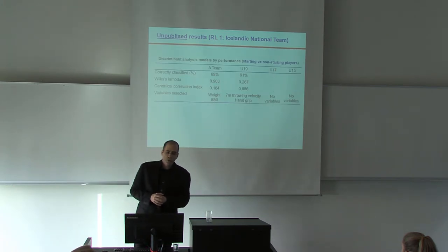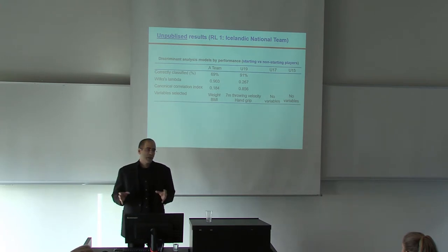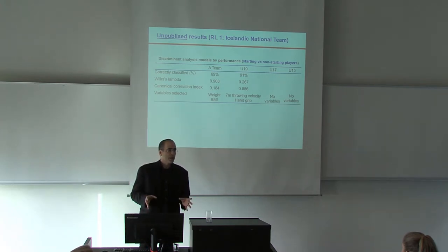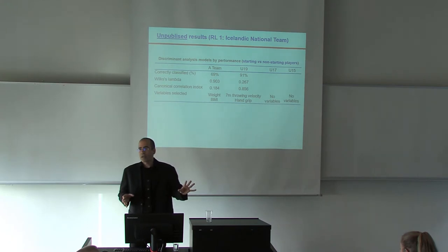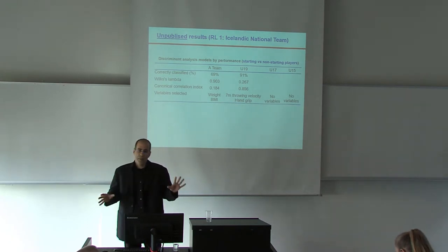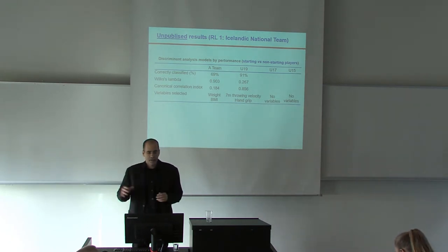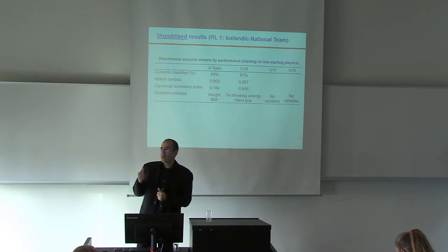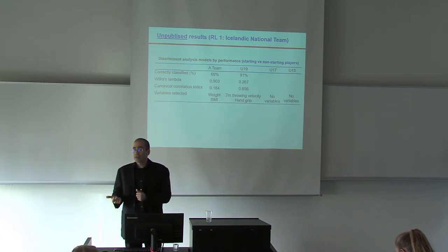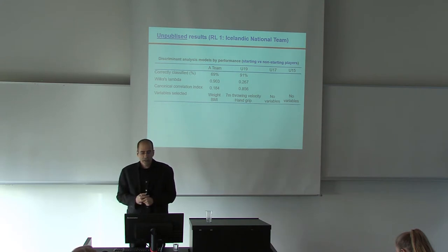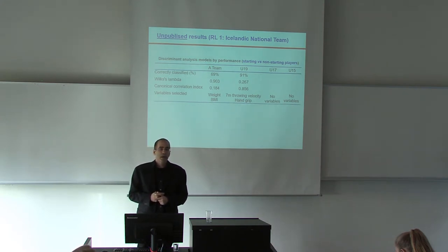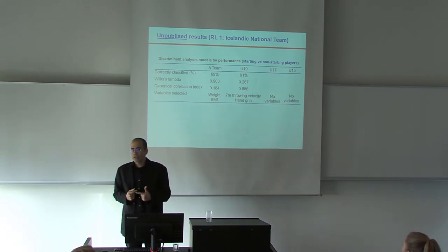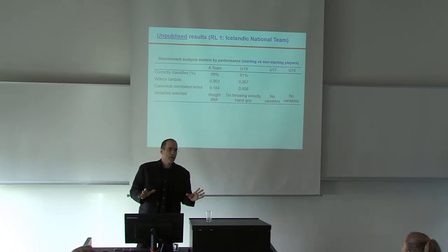Also, we have done one discriminant analysis to know what is the predictive variable to performance in handball, understanding performance between a starting player and non-starting player, the seven best players in the beginning and the second. There are no differences between under 15 and under 17 between starting and non-starting, but there were differences between under 19 with two variables, seven meters throwing velocity and hand grip, and the 18 only weight and body mass index. All this study is only in female.